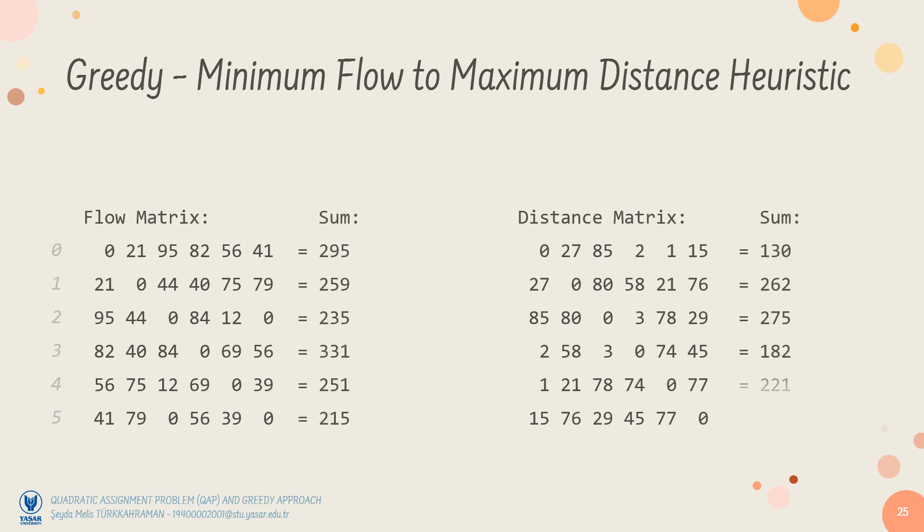For example, the summation of all flows associated with the facility 0 is 295. And the summation of all distances associated with the location 0 is 130. As its name indicates, the minimum flow to maximum distance heuristic designates an unassigned facility with the lowest sum of flows to the unassigned location with the highest sum of distances.